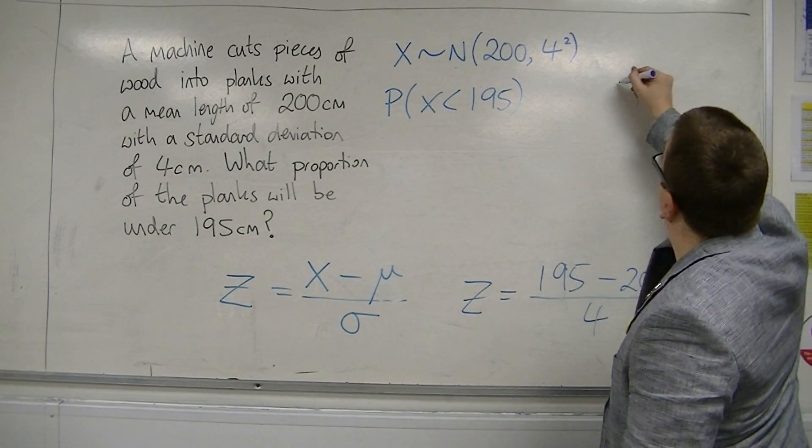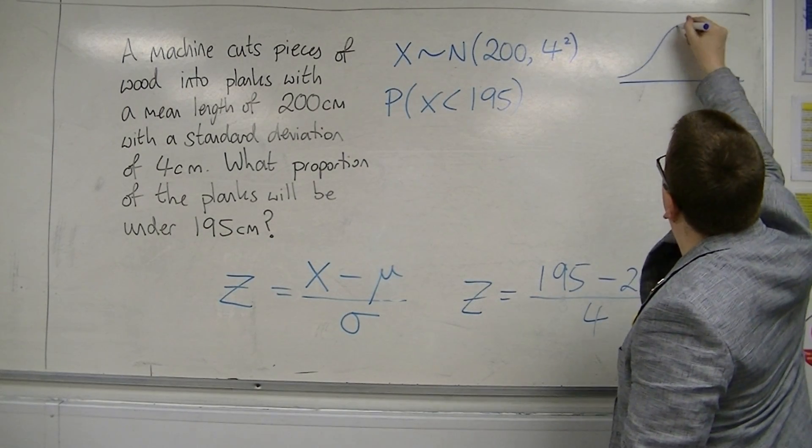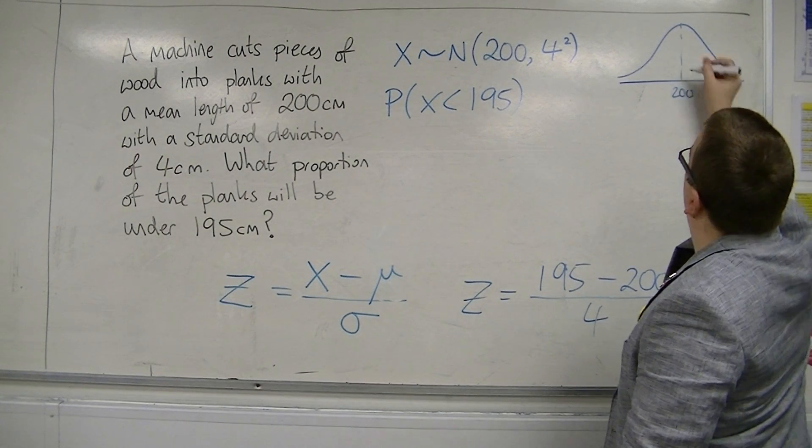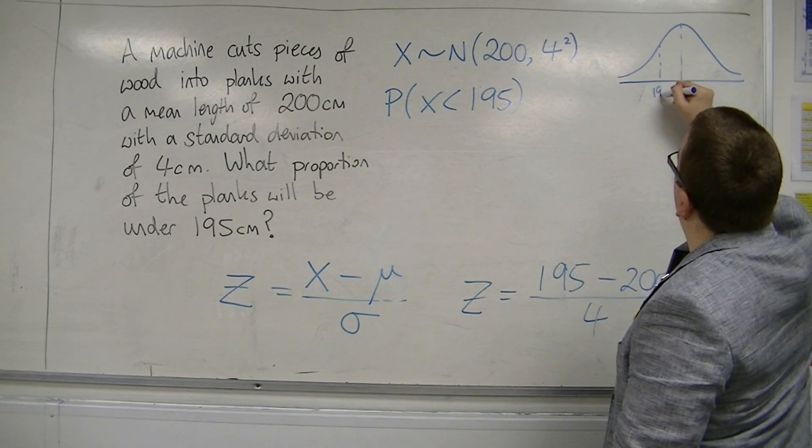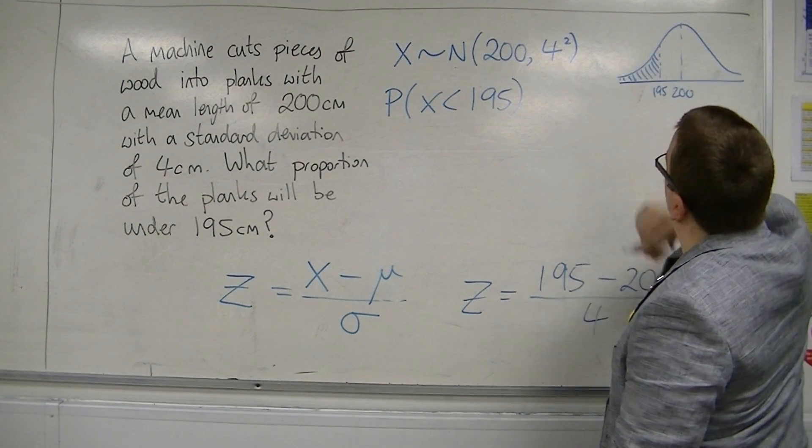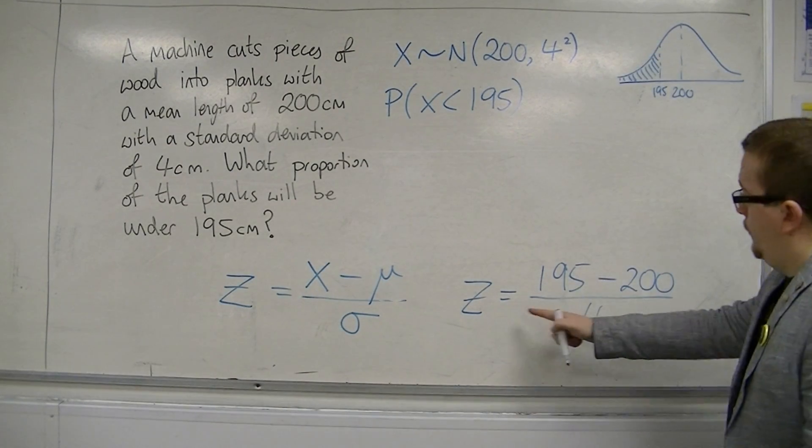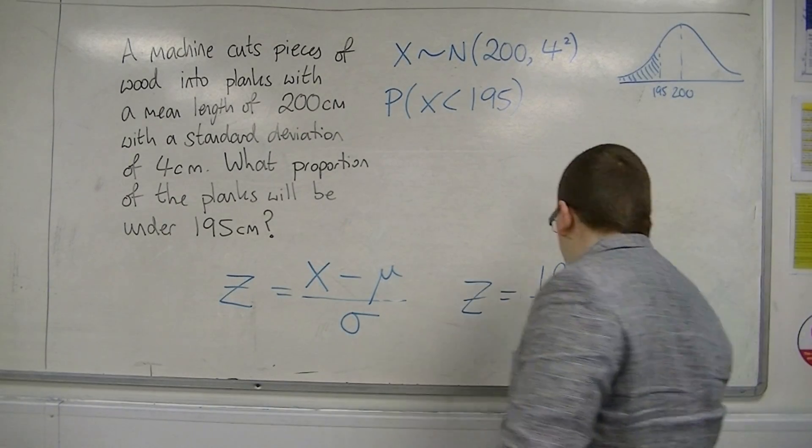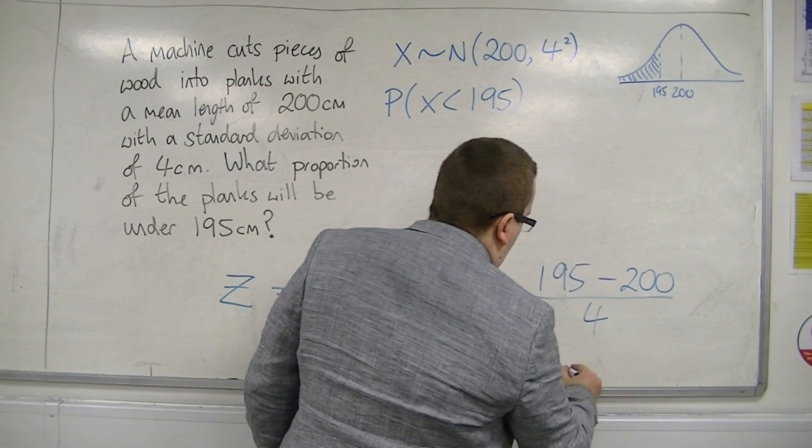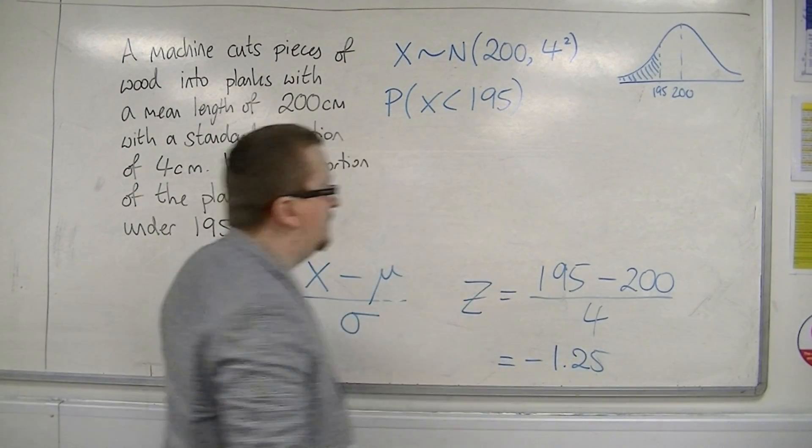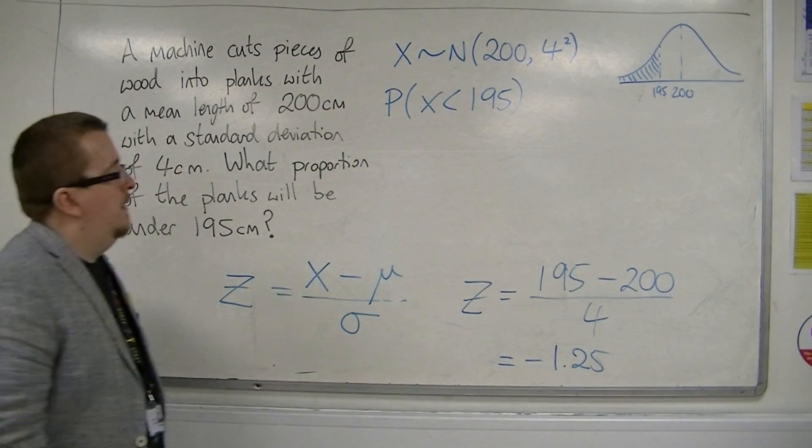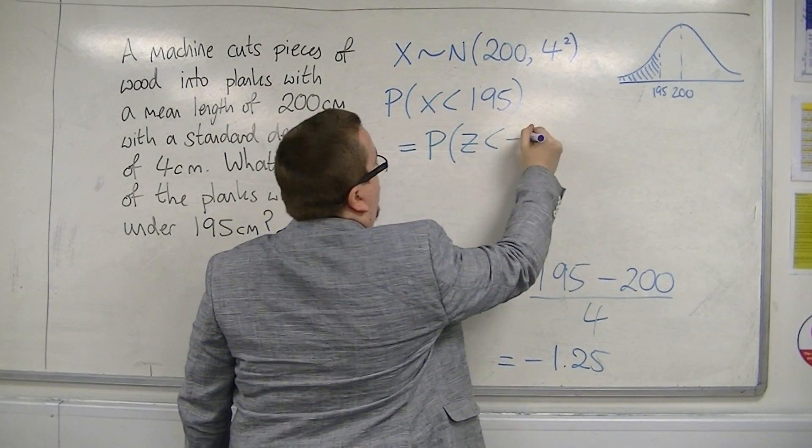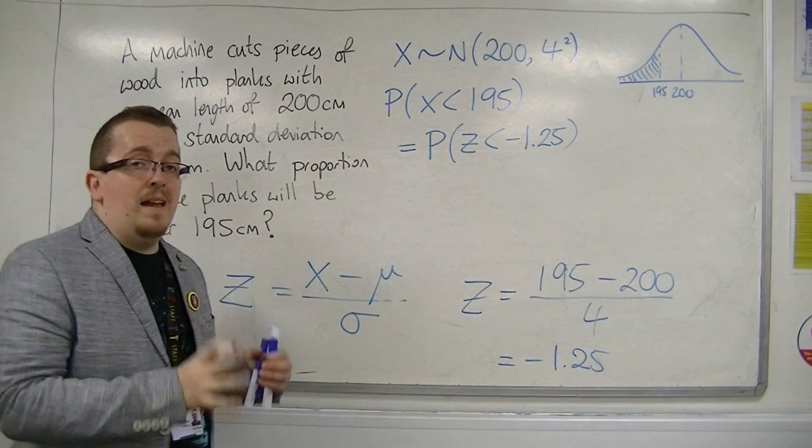So, what we're looking for, with a mean of 200, and that's 195, is this area under the curve. So, if I calculate what Z is here, so that's minus 5 quarters, so that's minus 1.25, then this is the same as the probability of Z being less than minus 1.25.